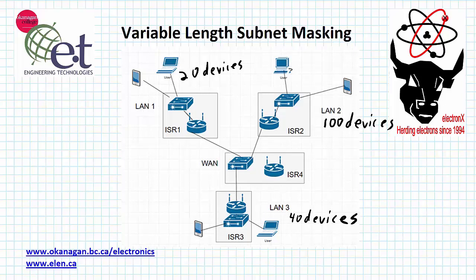In this particular example, we've got LAN1 with 20 devices, LAN2 with 100 devices, LAN3 with 40 devices, and LAN4 which is going to have about three or four IP addresses. Now if we started with a slash 24 network — 256 IP addresses — we could split that into four networks, but four equally sized networks would give us only 64 IP addresses per network. LAN2 requires 100 devices, so this would not work. Variable Length Subnet Masking allows us to more optimally assign the number of IP addresses to meet the needs of each network.